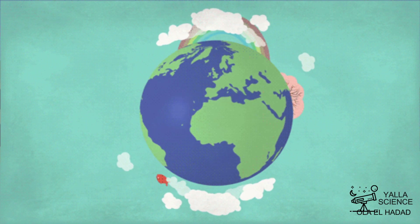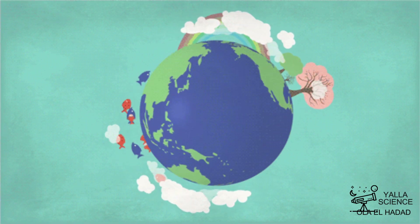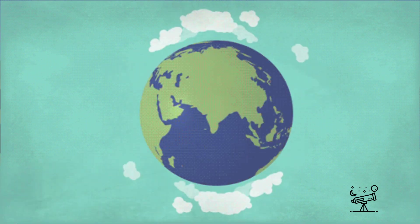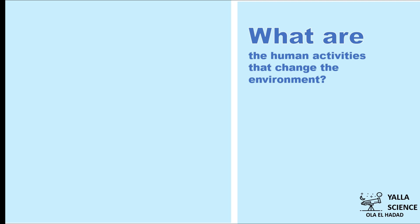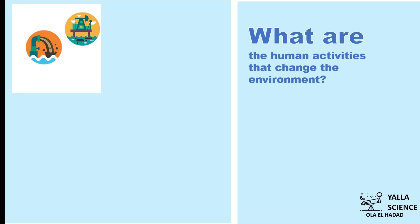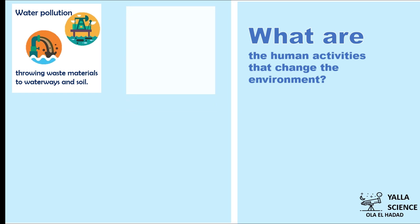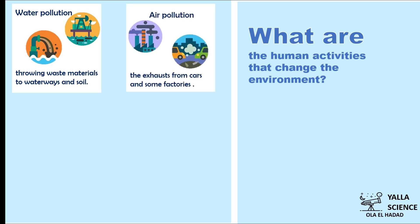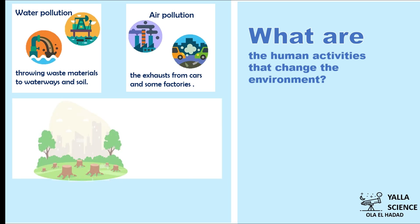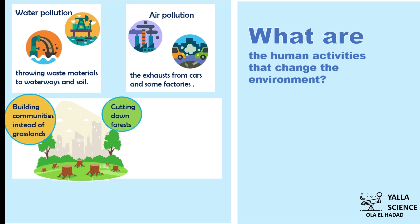These changes are harmful for us and other living organisms. Human activities that change the environment include: water pollution by throwing waste materials into waterways, and air pollution from exhaust from cars and factories.